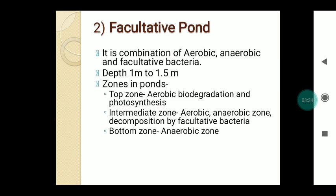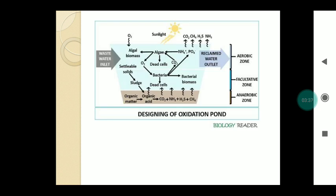The diagram shows the facultative pond: the upper surface has the aerobic zone, the middle has the facultative zone, and the bottom has the anaerobic zone. At the surface, bacterial-algae symbiosis maintains aerobic conditions through photosynthesis. In the middle facultative zone, both aerobic and anaerobic processes occur. At the bottom, the anaerobic zone performs decomposition directly in the absence of oxygen.